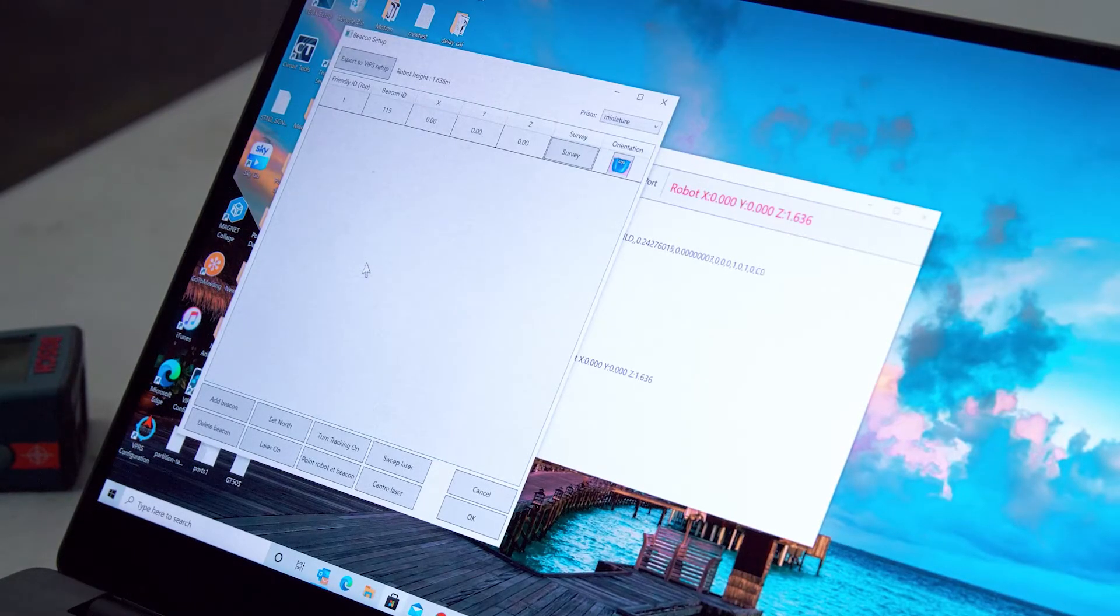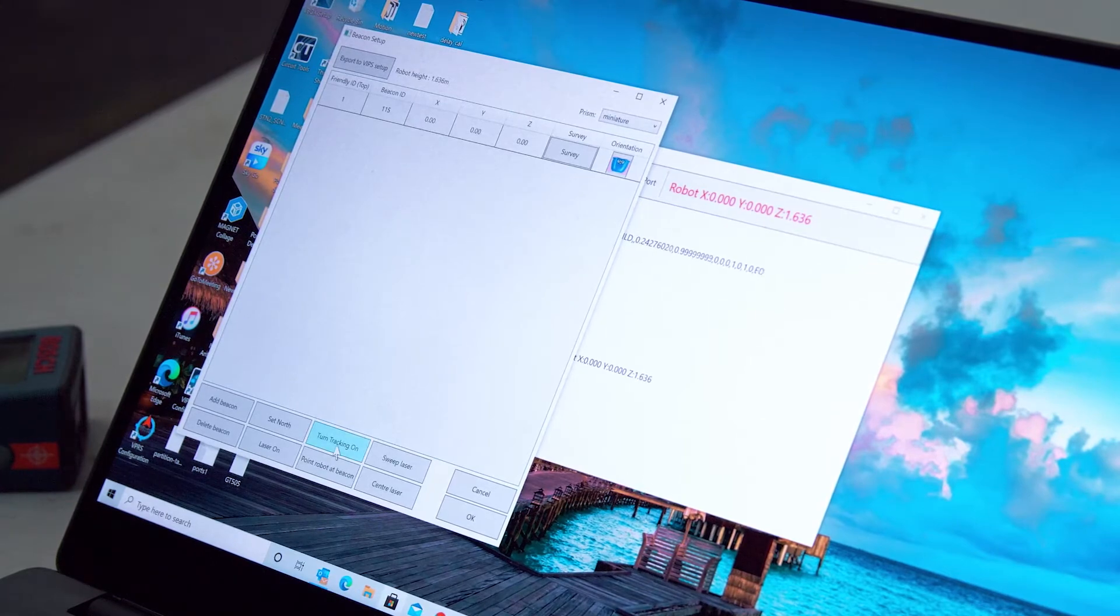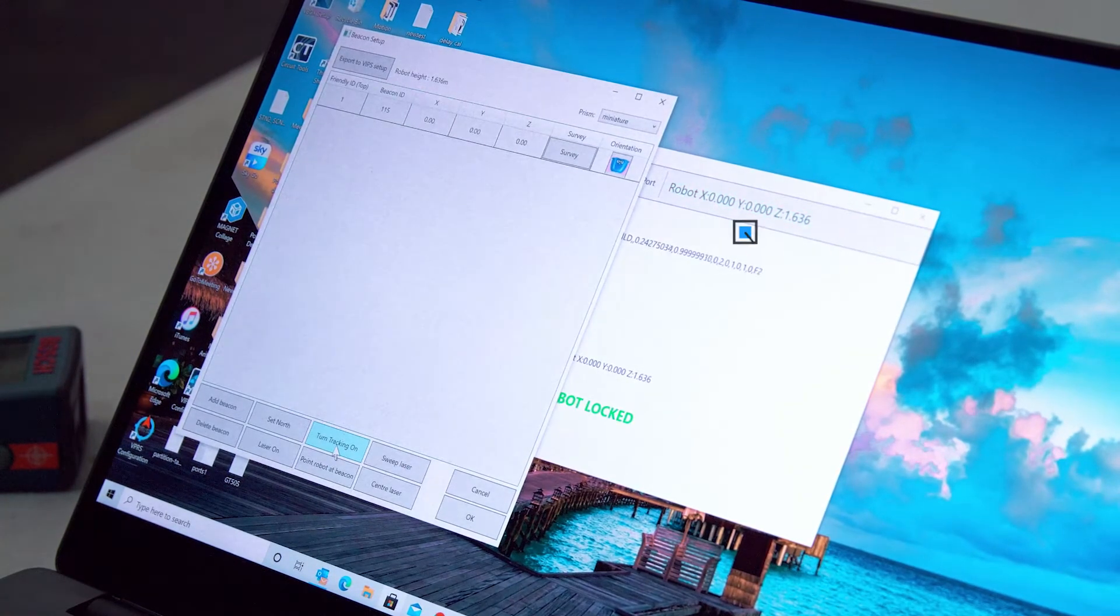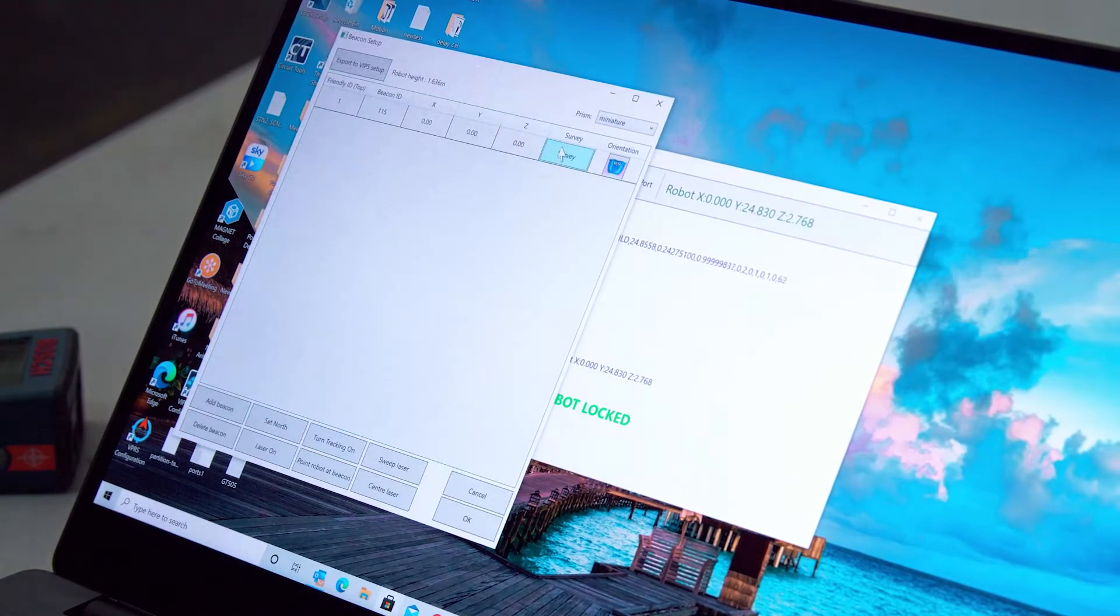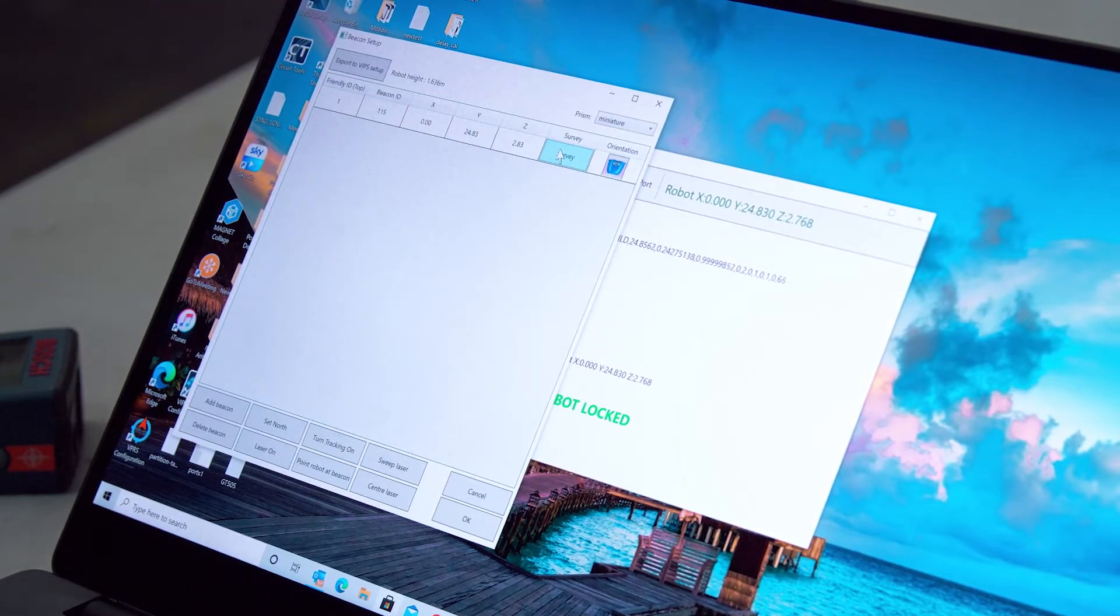Once lined up, use Turn Tracking On to lock the robot to the prism. This should only take a few seconds and the position data from the Total Station will turn green. You can now survey the beacon in.